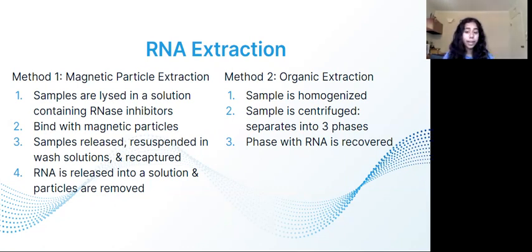Method two: organic extraction. First, the sample is homogenized in a phenol-containing solution. Then the sample is centrifuged during which the sample separates into three phases: a lower organic phase, a middle phase that contains denatured proteins and GDNA, and an upper aqueous phase that contains RNA. The upper aqueous phase is recovered and RNA is collected by alcohol precipitation and rehydration.